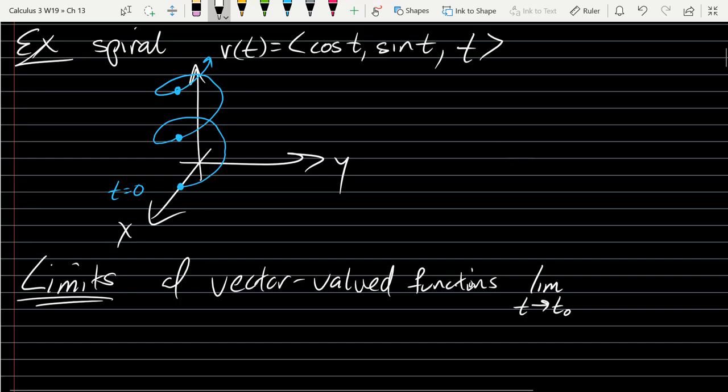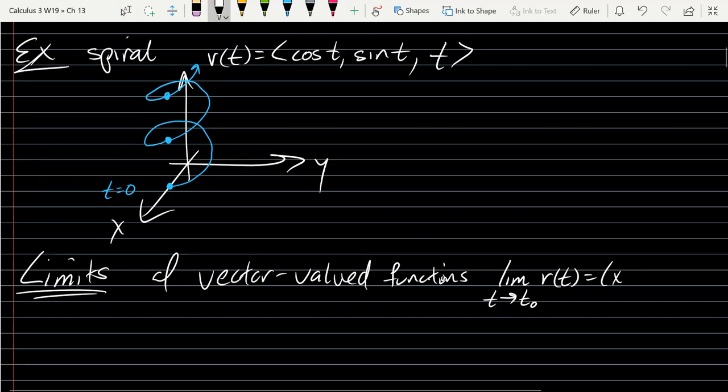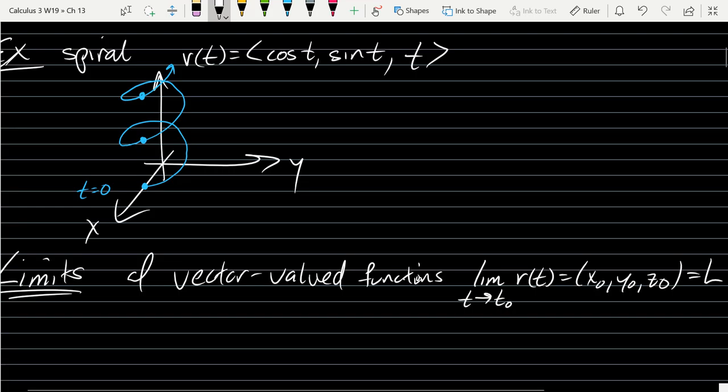These are limits of vector-valued functions. So limit, our input's t. Limit as t approaches some t-naught value. Our functions are of t. There's actually three components: x, y, and z component.